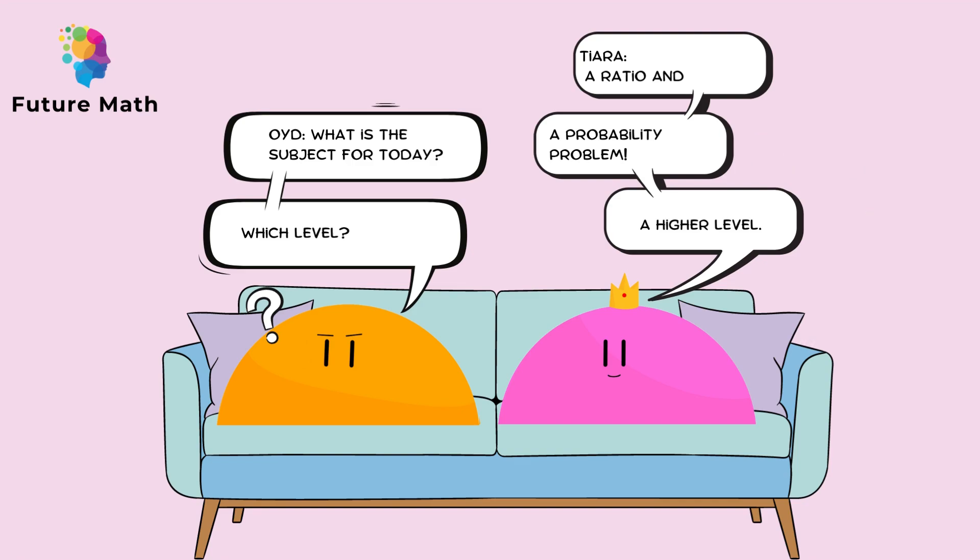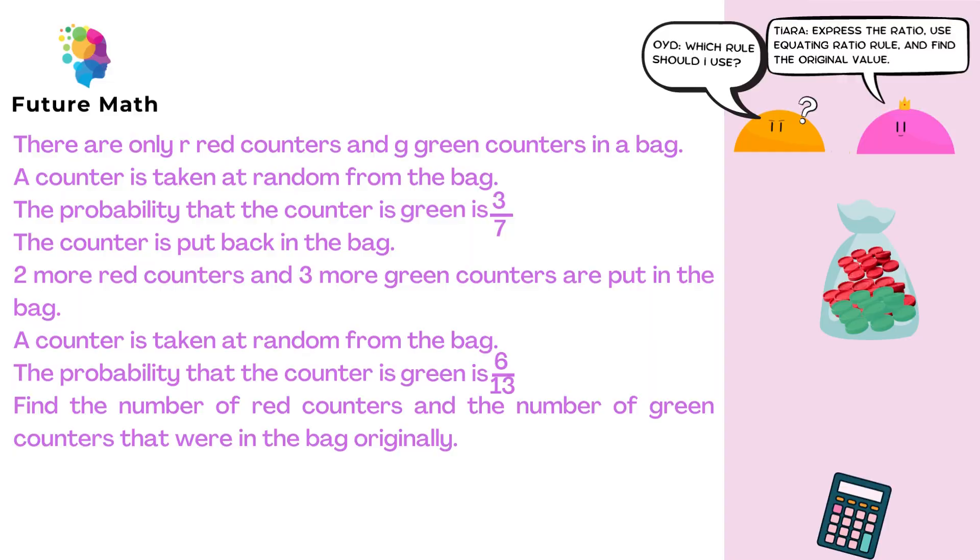Today's video is about ratio and probability problems. It says here there are only R red counters and G green counters in a bag. A counter is taken at random from the bag. The probability that the counter is green is 3 over 7. The counter is put back in the bag.